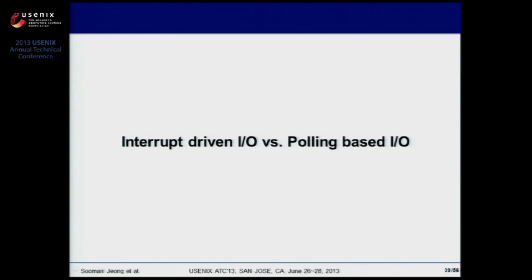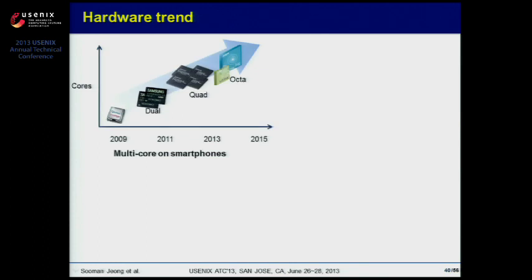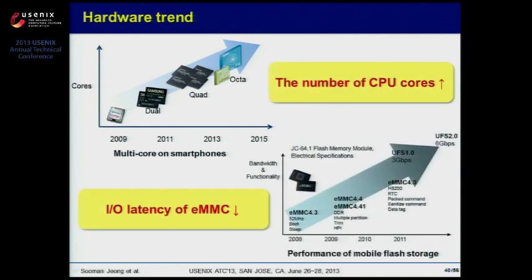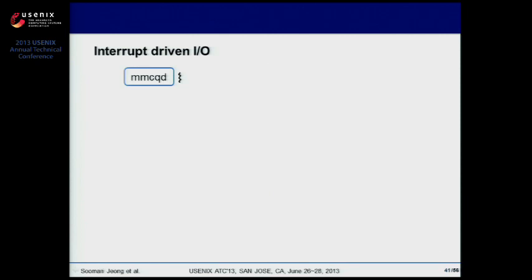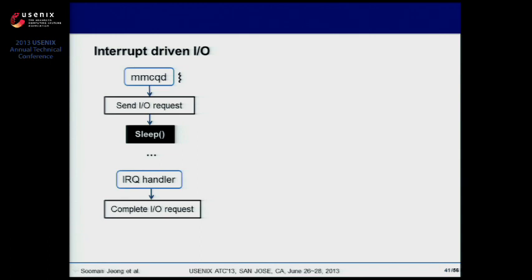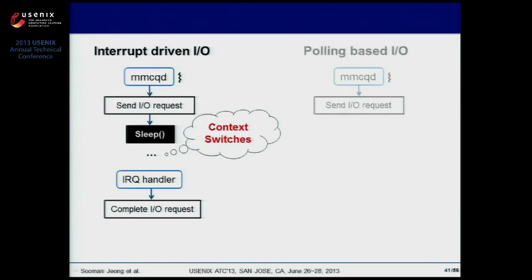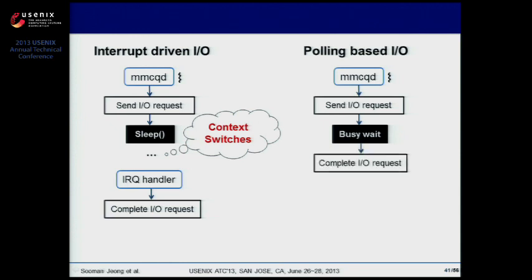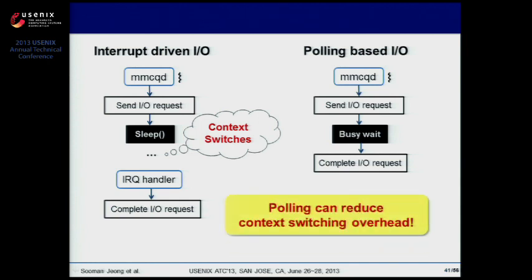Next, interrupt-driven I/O versus polling-based I/O. Recent smartphones have octa-core CPUs and their storage latency is getting smaller, creating a suitable environment for polling-based I/O. In the block device driver of Android, MMCQD handles I/O requests for eMMC. MMCQD uses an interrupt-driven method, but when many small I/Os arrive at the block layer, this causes performance drops due to excessive context switches. So we modified MMCQD to process I/O in a polling method, expecting performance gains by reducing context switching overhead.